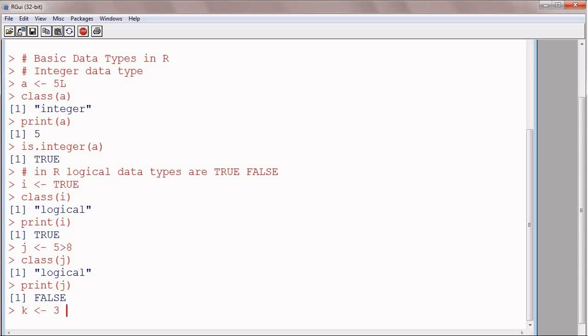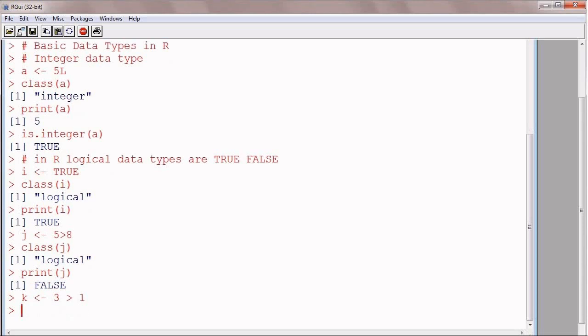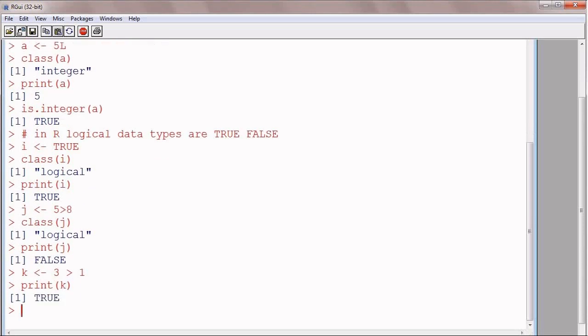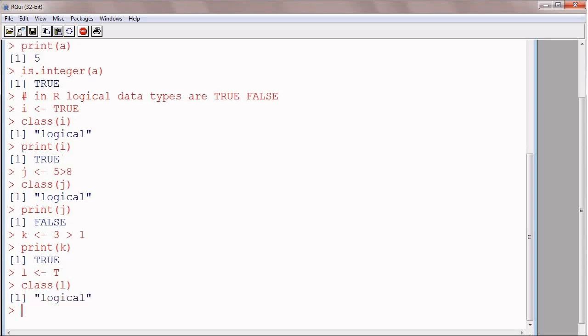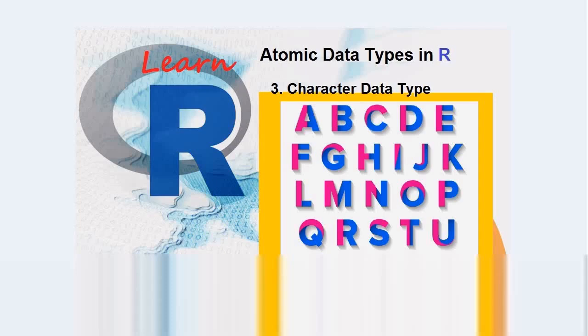K is assigned, now I am going to assign a true statement, 3 is greater than 1, that is true, so K is assigned true. Print K, and that will be true, and the class will be of course logical. L is assigned T, and you can also write T or F in place of full true word or false word.